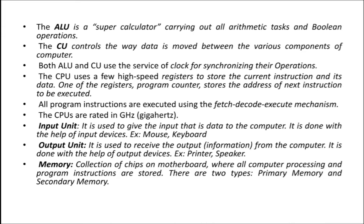Next: Control Unit. The CU — the control unit — controls the way data is moved between the various components of the computer. For example, you have data from the input unit. Where does it go? Storage. Then where? CPU. Then where? Monitor screen — output. So the control unit manages data flow: input → storage → CPU → output.